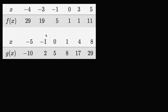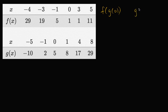We have some tables here that give us what the functions f and g are when you give them certain inputs. So when you input negative four, f of negative four is 29 — that's going to be the output of that function. We have that for both f and g. What I want to do is evaluate two composite functions: f of g of zero, and g of f of zero.